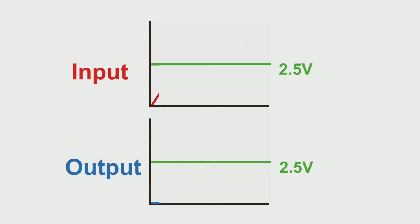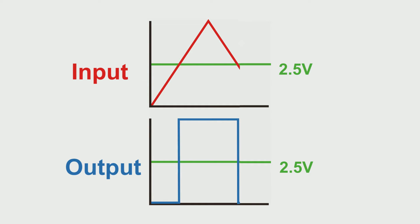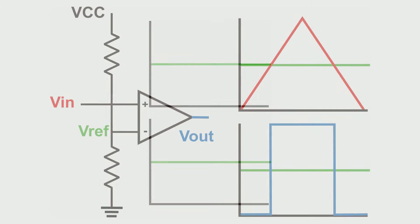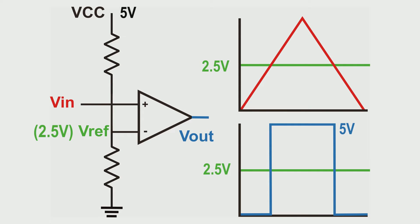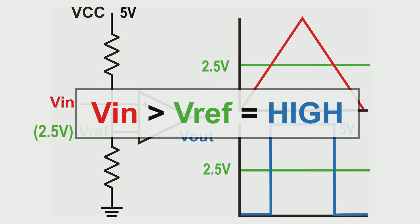Look at the diagram — the top is V input and the bottom is V output. So when the V input (the red line) reaches more than 2.5 volts, the output will go high, and when the input is below 2.5 volts, the output will go low. The logical formula is: if V input is more than V reference, then the output will be high. That's what the non-inverting comparator does — easy, right?